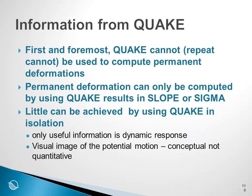Summarizing QuakeW: QuakeW cannot be used to compute permanent deformations. Whether we do it with equivalent linear or with the nonlinear model, QuakeW alone has not been intended to compute permanent deformations. In the GeoStudio environment, permanent deformations can only be computed by using QuakeW results in Slope or Sigma. Consequently, little can be achieved with regard to permanent deformations by using QuakeW in isolation.